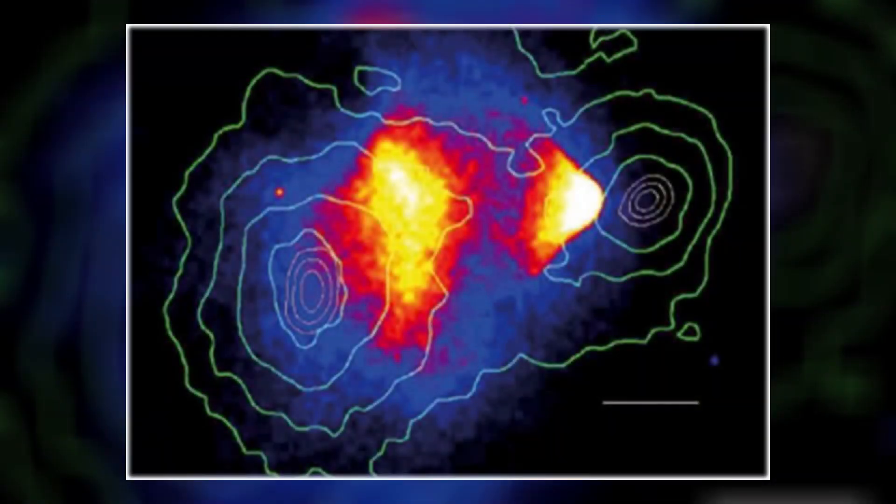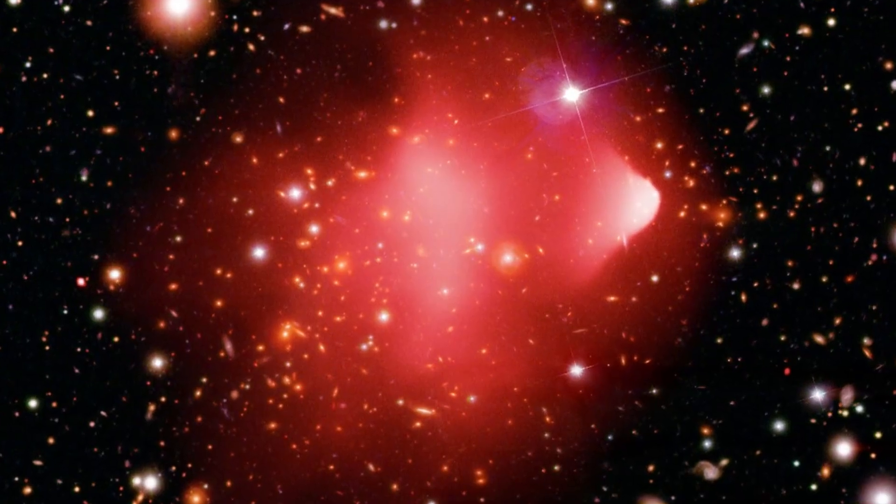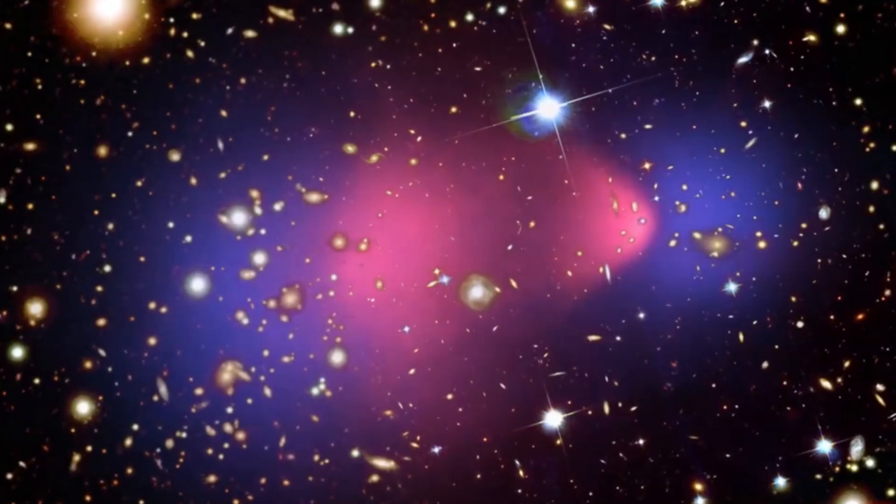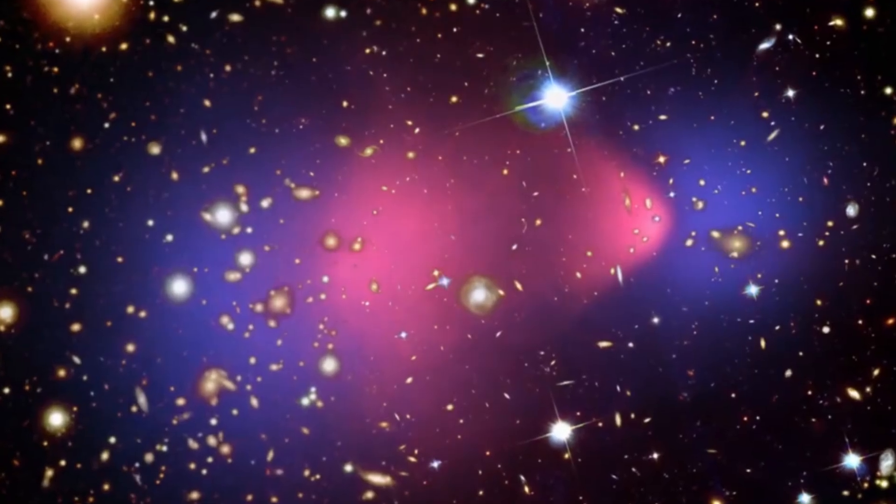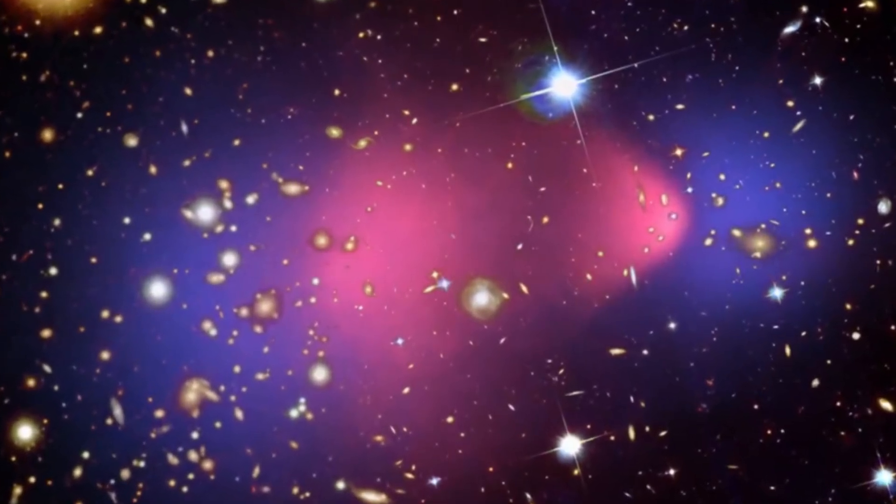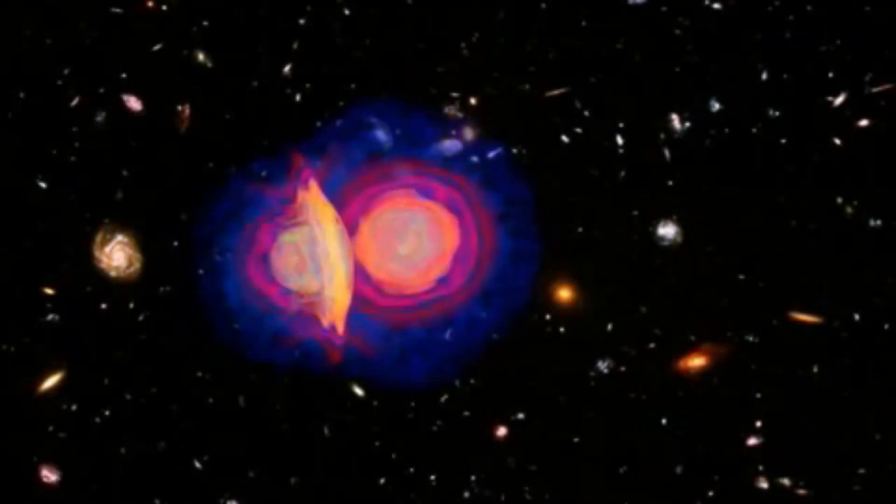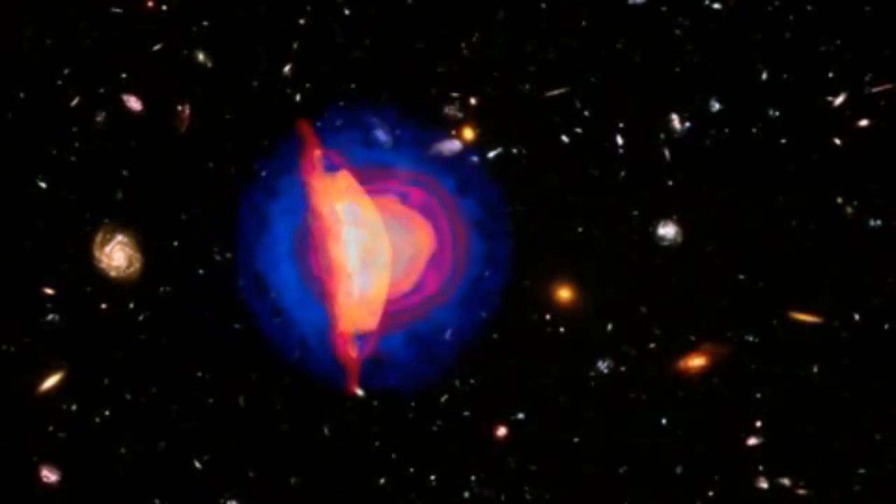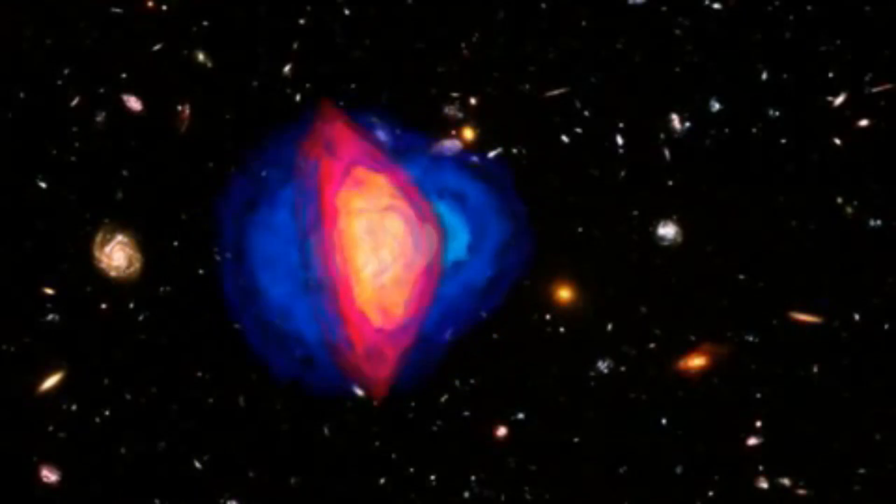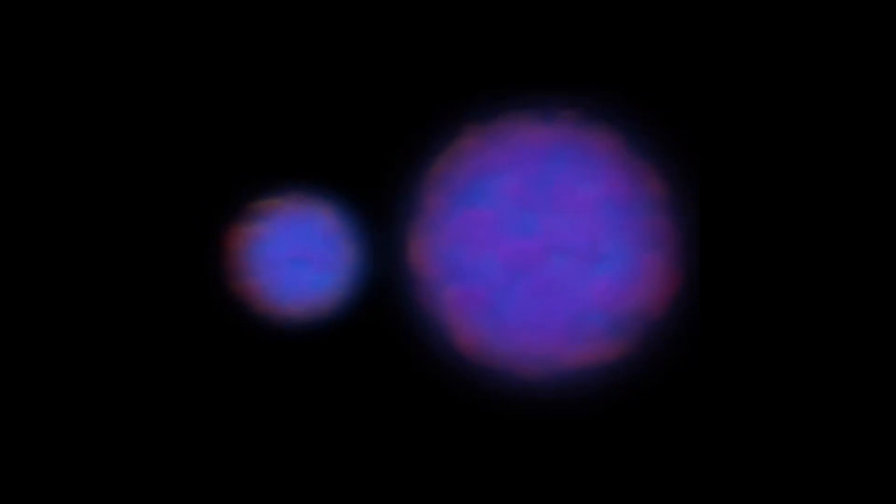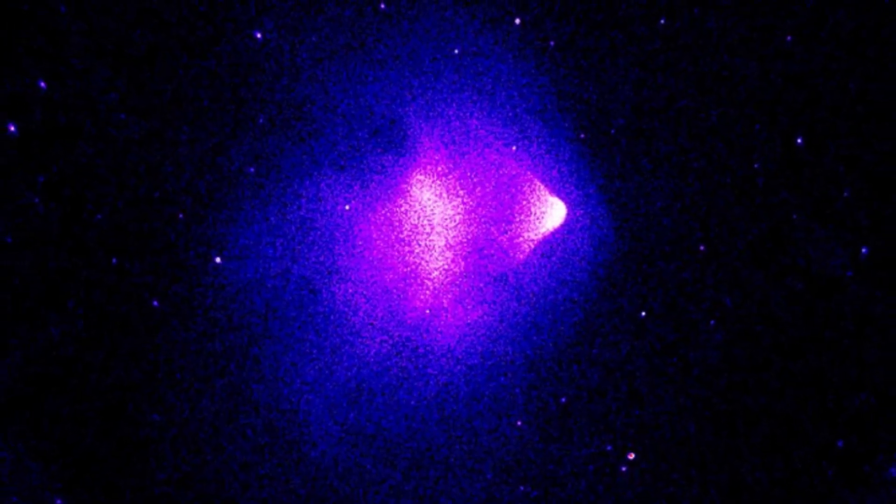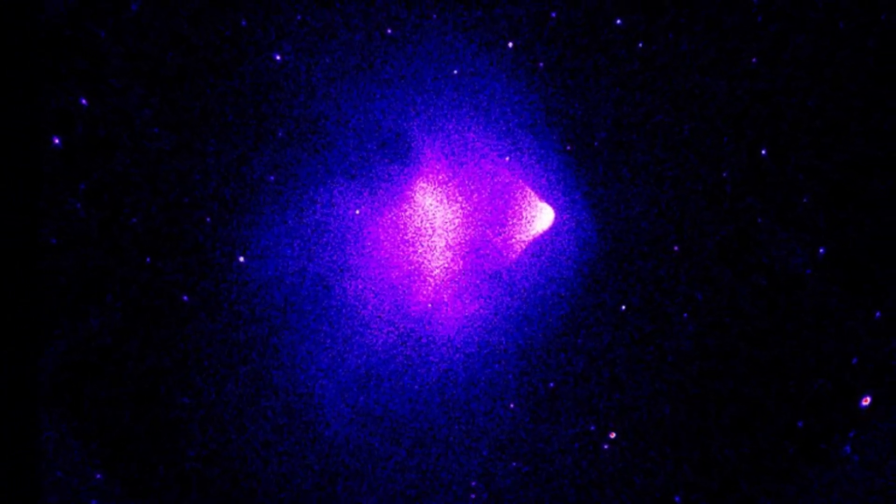The collision generated a shockwave of hot gas visible using X-ray imaging and also caused the dark matter to separate from the normal matter within the cluster. Dark matter was identified through its gravitational lensing effect on galaxies in the background. The Bullet Cluster serves as the most compelling evidence supporting the existence of dark matter, a theorized form of matter invisible to light yet capable of exerting gravitational forces.